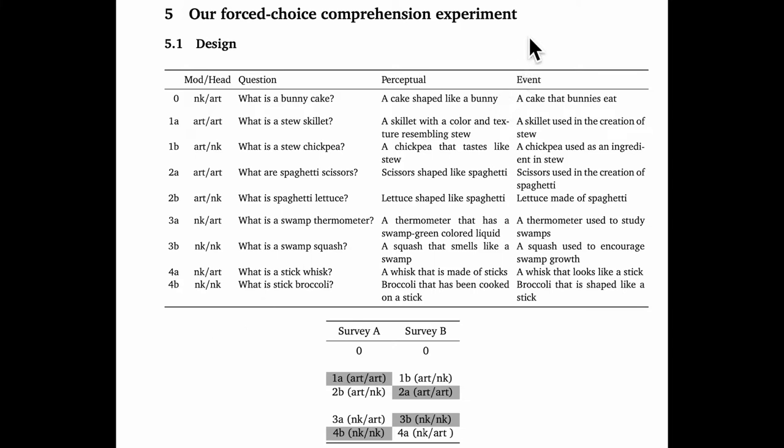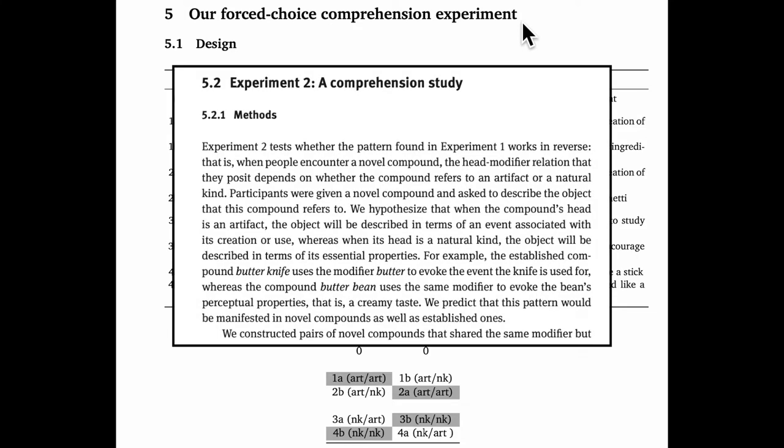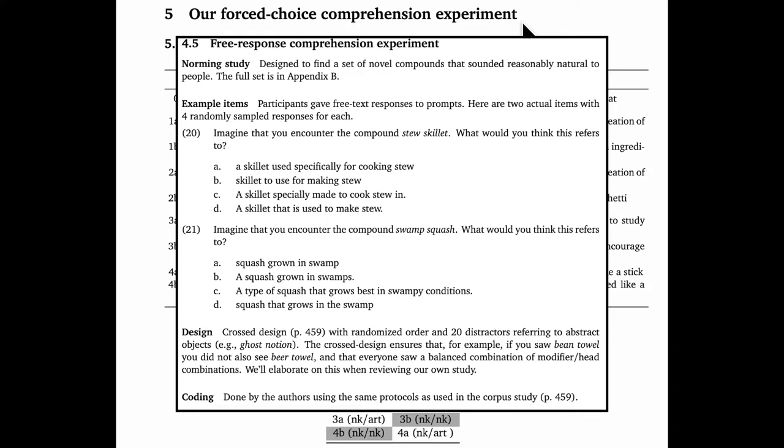Do watch those first. This screencast won't make much sense without those under your belt. So our focus for this screencast is solely on the in-class experiment that we did. Recall that Levine et al. did a comprehension experiment that I described as a free response comprehension experiment because participants were prompted with novel compounds like stew skillet and asked to just write out what they thought the compound was describing. And then in a subsequent coding phase, we got classifications for those statements and that allowed for a connection with the event-related modifier hypothesis and the essence-related modifier hypothesis.